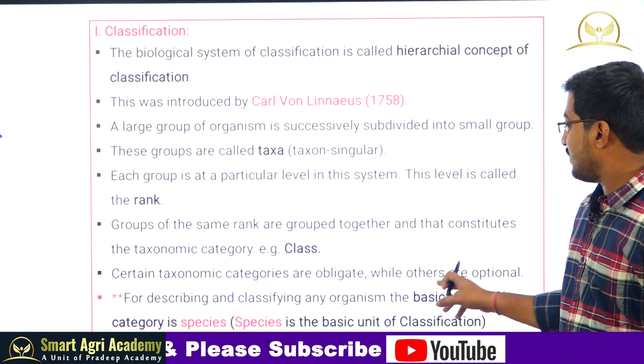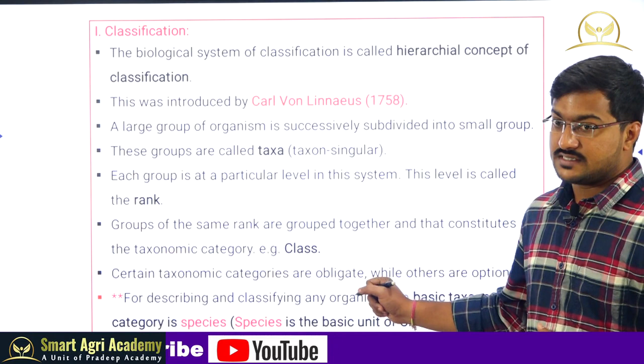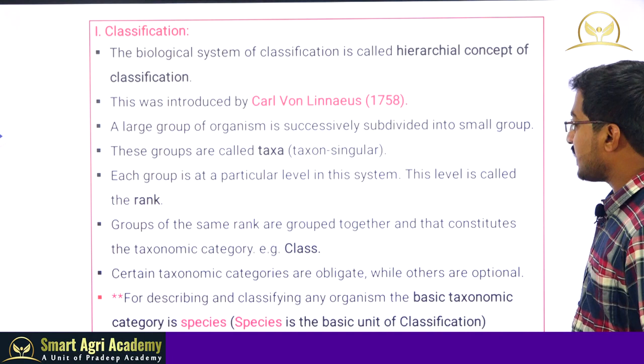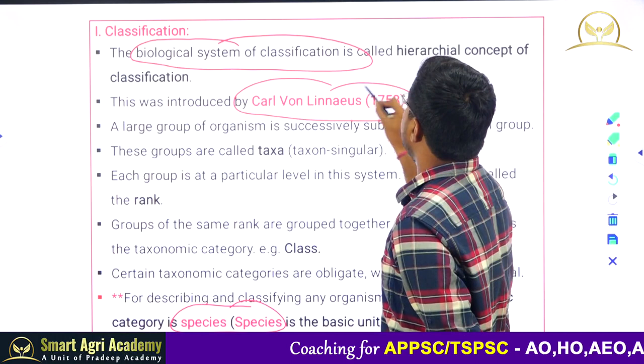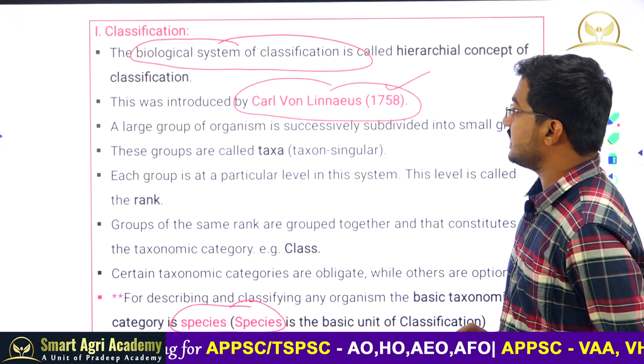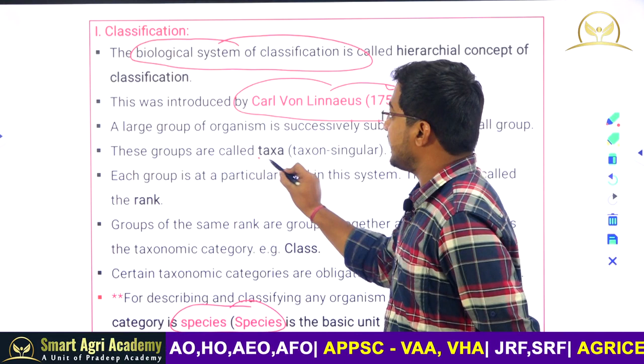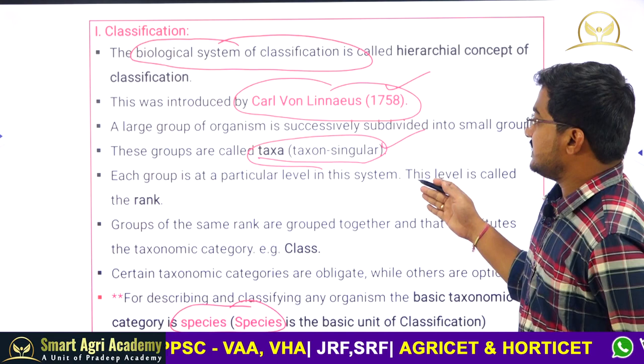For describing and classifying any organism, the basic taxonomic category is species — this is very important from an exam perspective. The basic taxonomic unit of classification is species. The biological system of classification was introduced by Carl von Linnaeus in 1758. The different groups of organisms classified by Linnaeus are taxa (plural), with taxon being the singular. Each group is at a particular level — what is the hierarchy? — that level is the rank of the particular taxon.